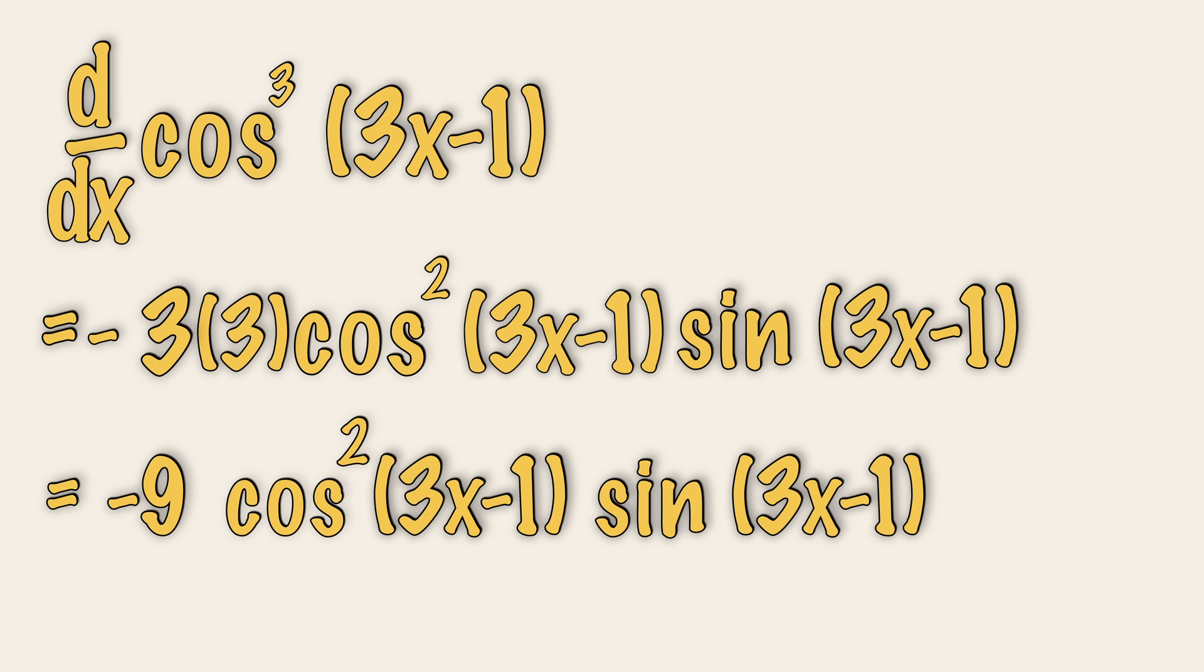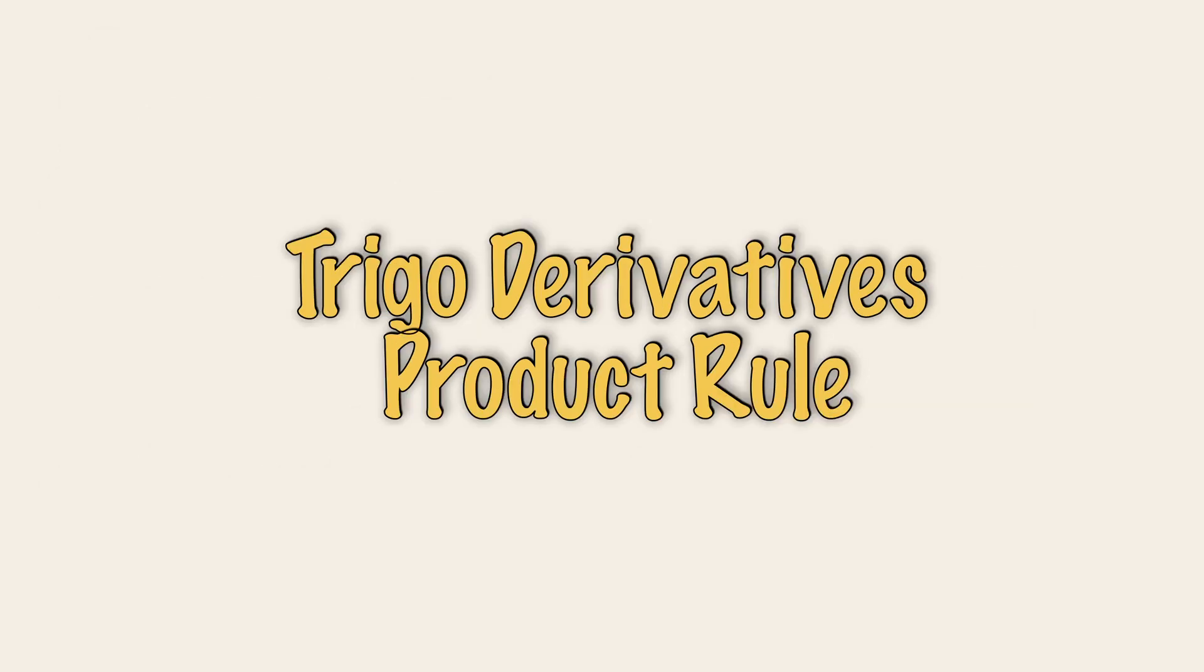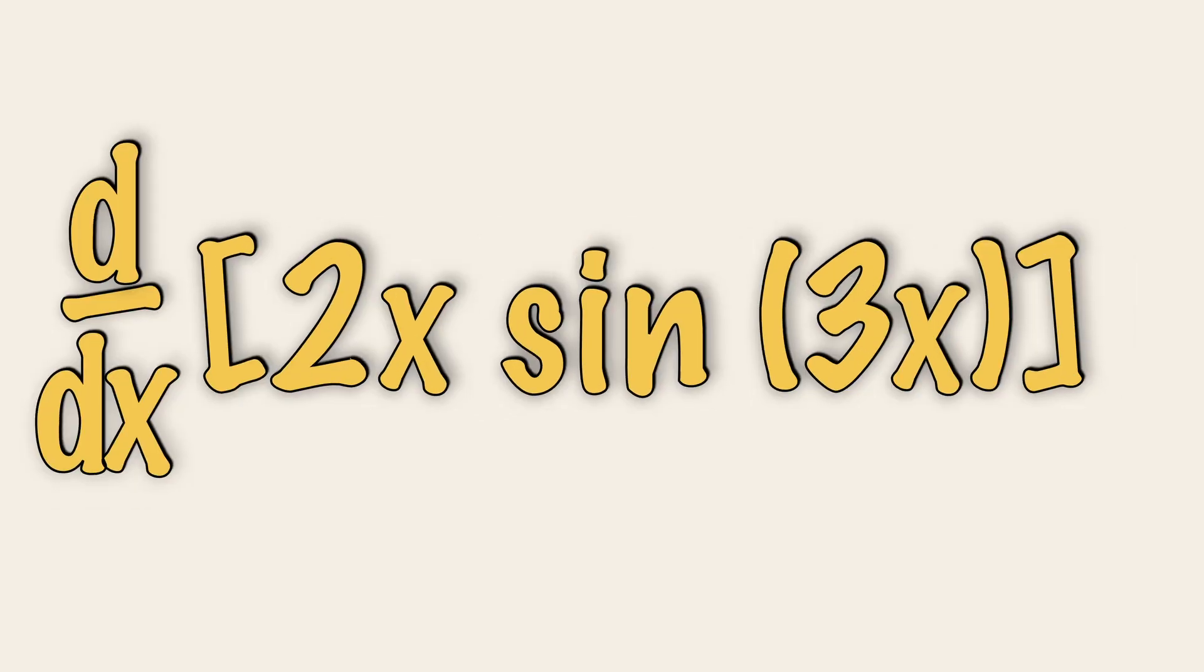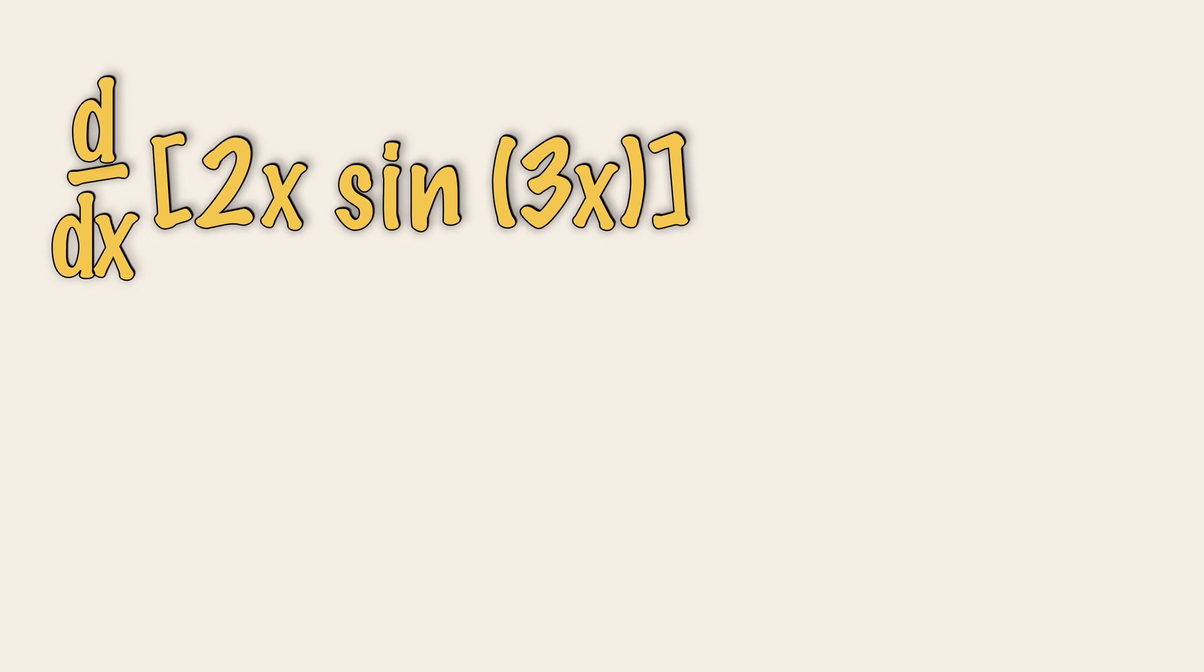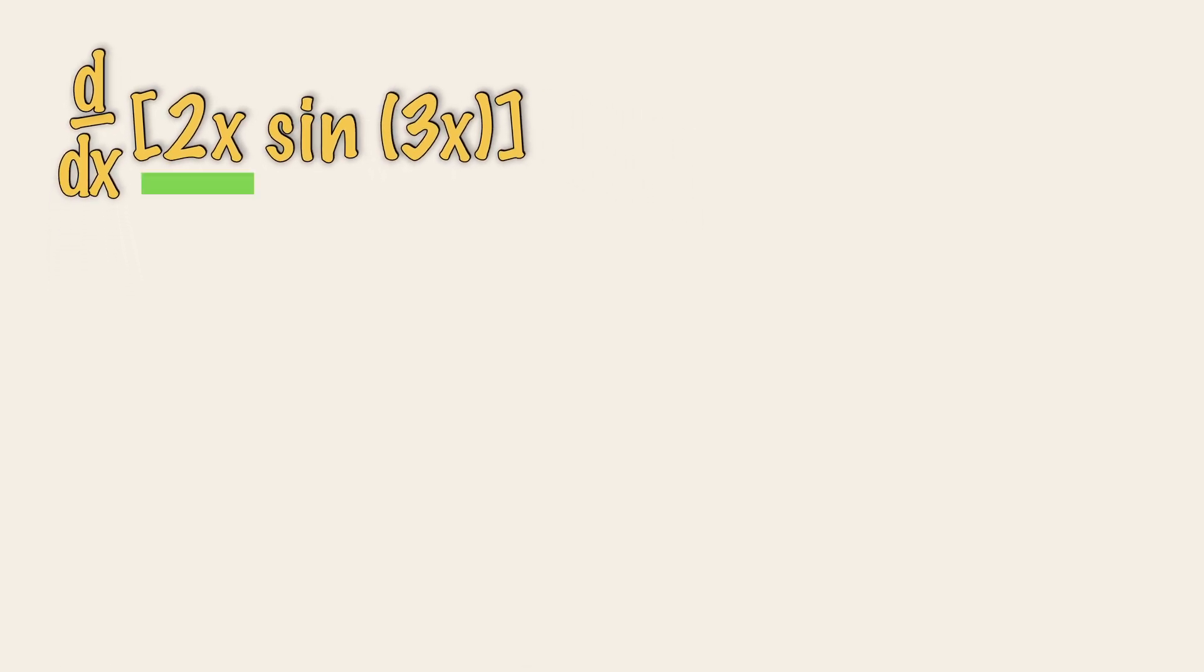Now let's cover all grounds and try to introduce a question that involves a product rule. Now if you see over here, this function is a product of two variables, 2x and sine 3x. Therefore, we are going to use the product rule to help us differentiate this expression. Now we are going to keep the second part, which is sine 3x. Differentiate the first part, which is 2.